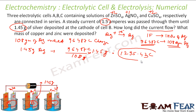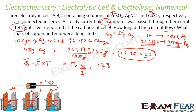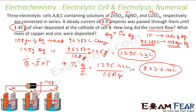Using Q = I × T: T = Q ÷ I = 1295.43 ÷ 1.5 = 863.6 seconds. Converting: 863.6 ÷ 60 = 14.4 minutes. This is the time that the current flowed.